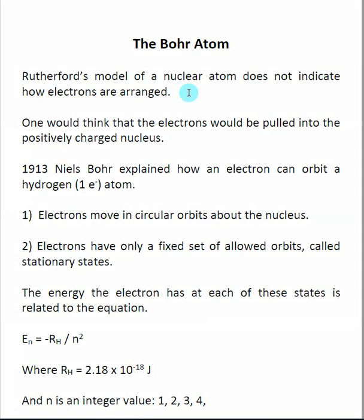Thus far we've been focusing more on the nucleus of atoms. We already understand that Rutherford came up with a nuclear model, which says the nucleus contains protons and neutrons. But Rutherford's model of the nuclear atom doesn't talk about the electrons — how they are arranged or what their characteristics are. You would think that electrons would be immediately attracted to the nucleus, since the nucleus has protons and is positively charged, and electrons are negatively charged. But we understand that's not what happens.